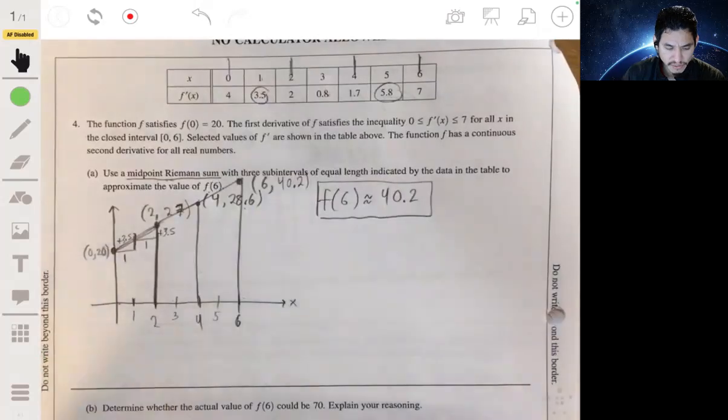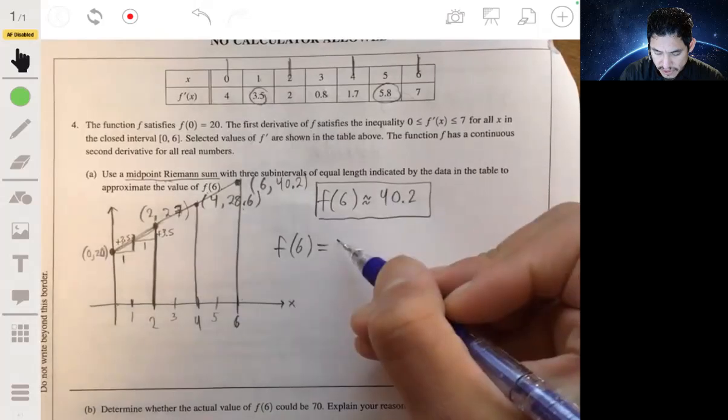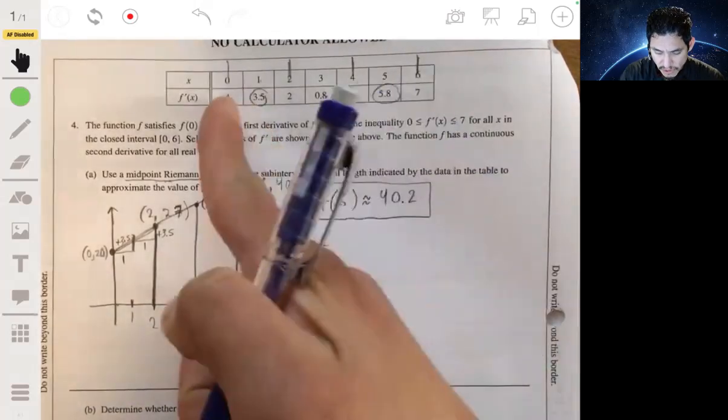If you just want to see the simple work, we would just use the algebraic equation. And f of 6 would be equal to the starting value, 20, f of 0.